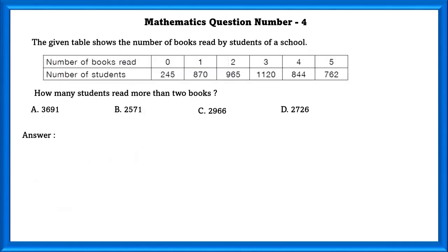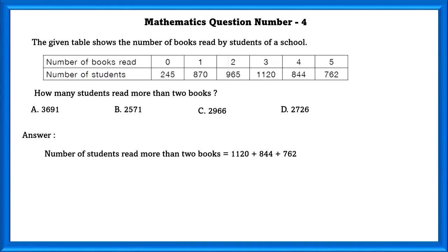The sum of digits at the hundreds place is equal to 6 plus 2, which is equal to 8. Mathematics question number 4. The given table shows the number of books read by students of a school. How many students read more than 2 books? Since students also read 3, 4, and 5 books, which are all more than 2, we have to add all those, which is equal to 2,726 students.